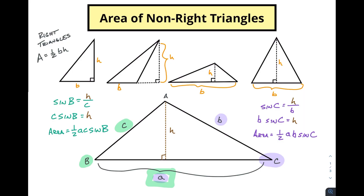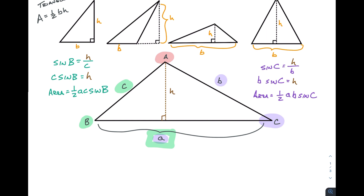Notice a pattern with our formula. In the first formula we have A, B, and sin C — two sides and the included angle. In the second we have A, C, and sin B — again two sides and the included angle. Whether I rotate the triangle to sit on side C or side B, we can do the same for side A: area equals one-half BC sin A. As long as you've got two sides and the included angle, you can find the area of a non-right triangle.